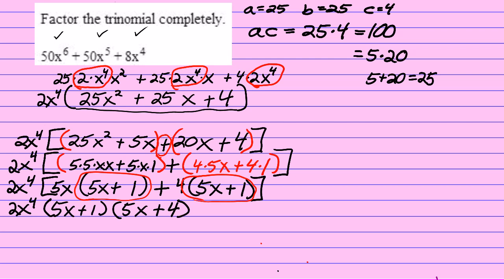And now I'm going to check it. The first thing I'm going to do is I'm going to FOIL 5x plus 1 times 5x plus 4, first outside inside last. That'll give me 25x squared plus 20x plus 5x is plus 25x plus 4.